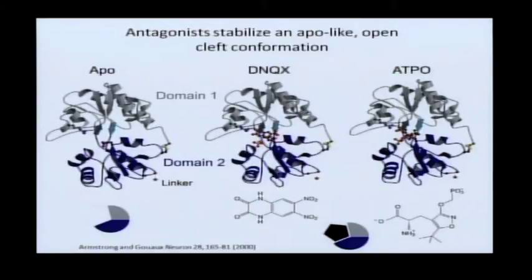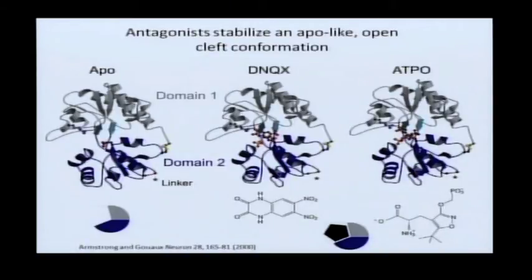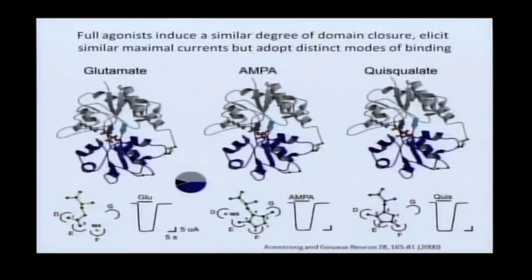This clamshell told us what a fraction of the receptor looked like, but it didn't tell us much about pharmacology until we determined crystal structures with antagonists — the classically used chromenoquinolinedione DNQX and an amino acid-like antagonist named Atpo. While these two different antagonists have completely different structures, they do the same thing: they bind to the cleft of the clamshell and stabilize the clamshell in an open-cleft conformation, thus rendering the channel inactive and incapable of gating.